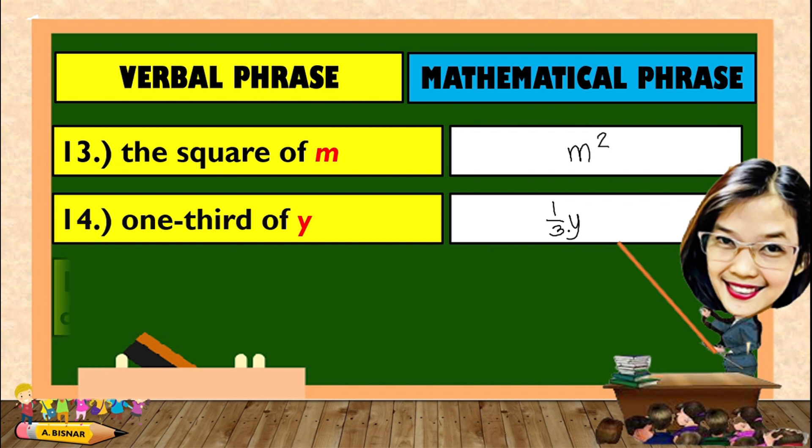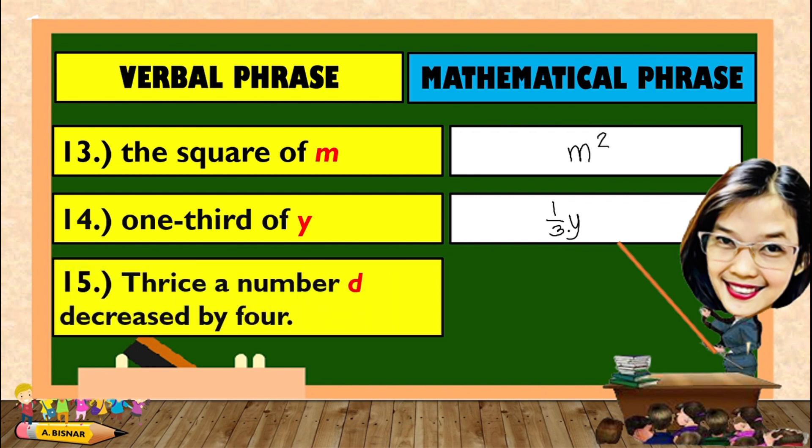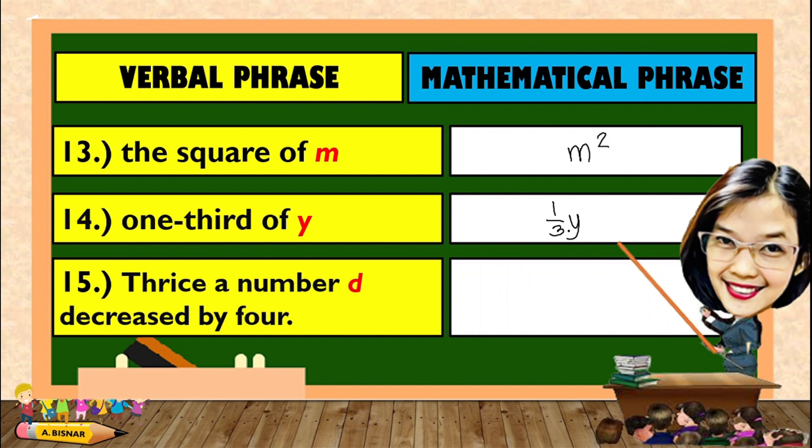And for the last one. Thrice a number D decreased by 4. Now, what does it mean? Thrice of a number. Of what number? Of a number D. Decreased by 4. And that's it. I hope you learned. Thank you.